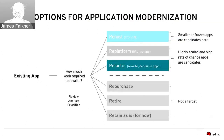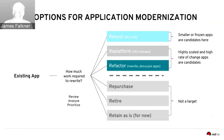There are three modernization options: rehost, replatform, and refactor. Rehost is simply moving the application as-is with very little or no changes to a more modern application platform like JBoss EAP along with OpenShift. Replatforming is similar but slightly more invasive — you start taking advantage of platform features like OpenShift for better performance, scalability, or manageability. Refactor is the complete rewrite using modern app dev technologies, methodologies, and tools.